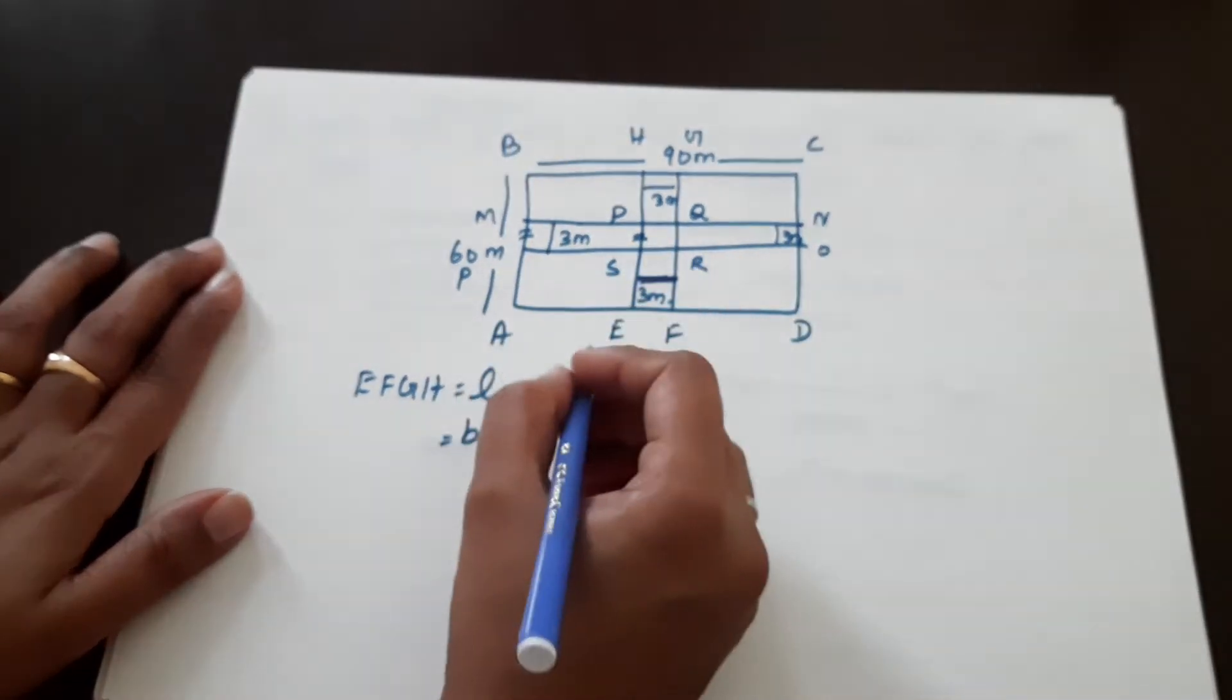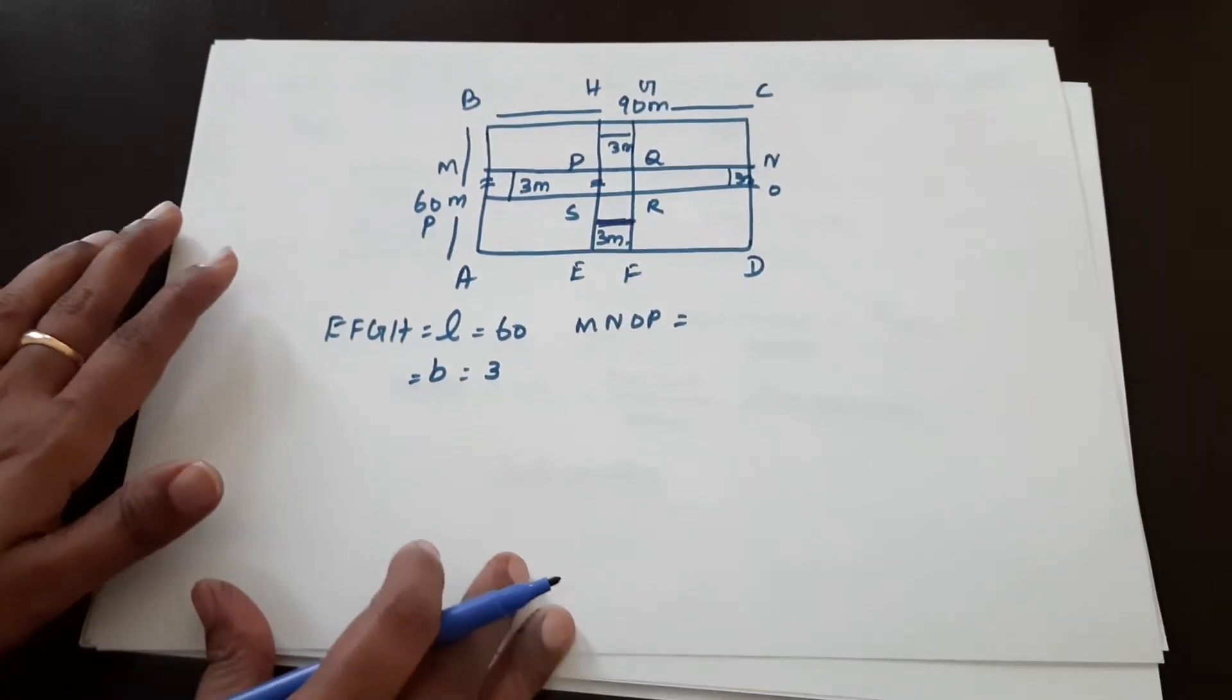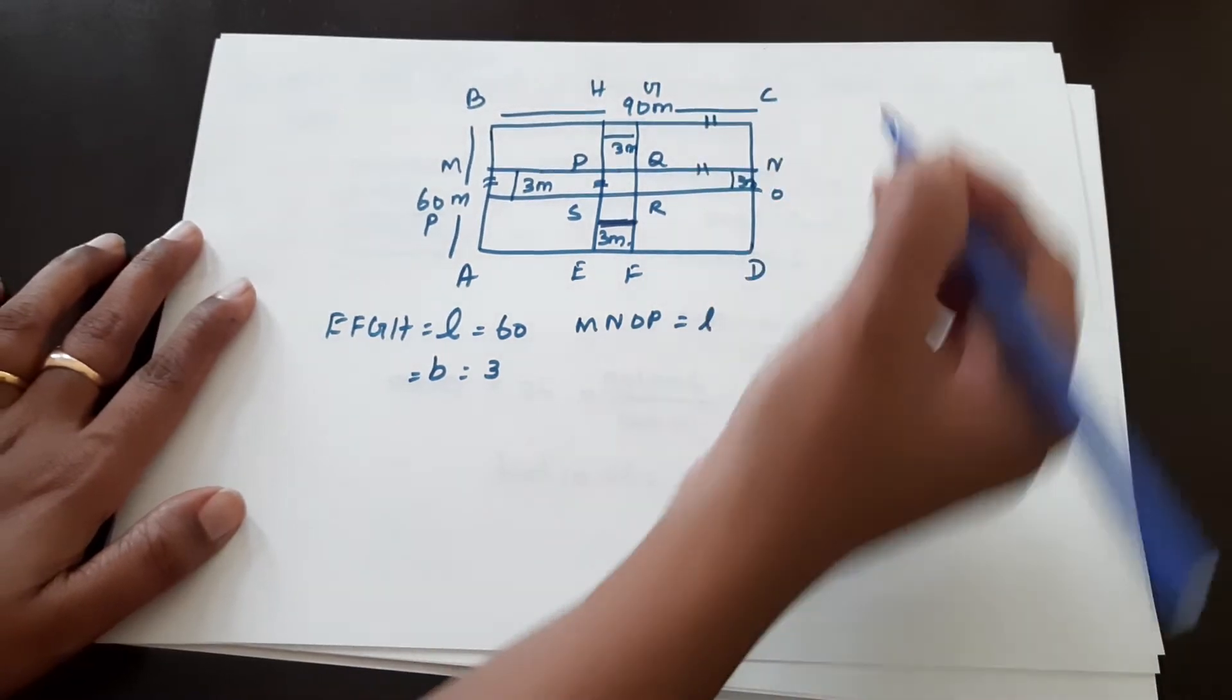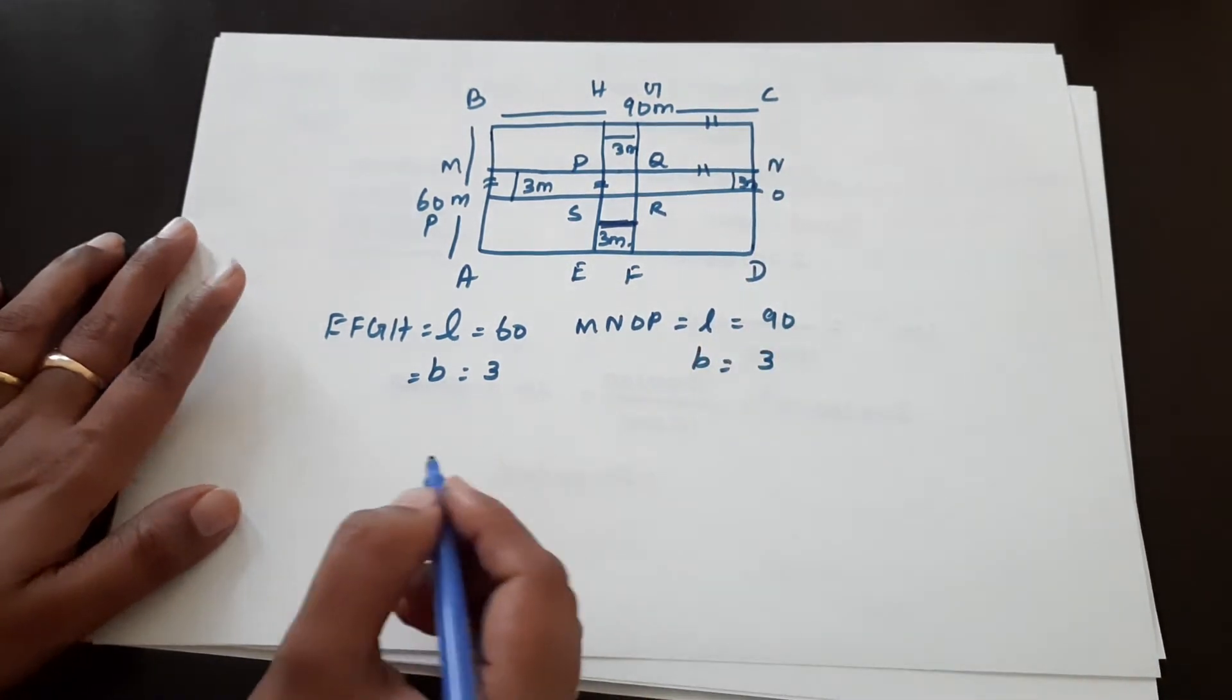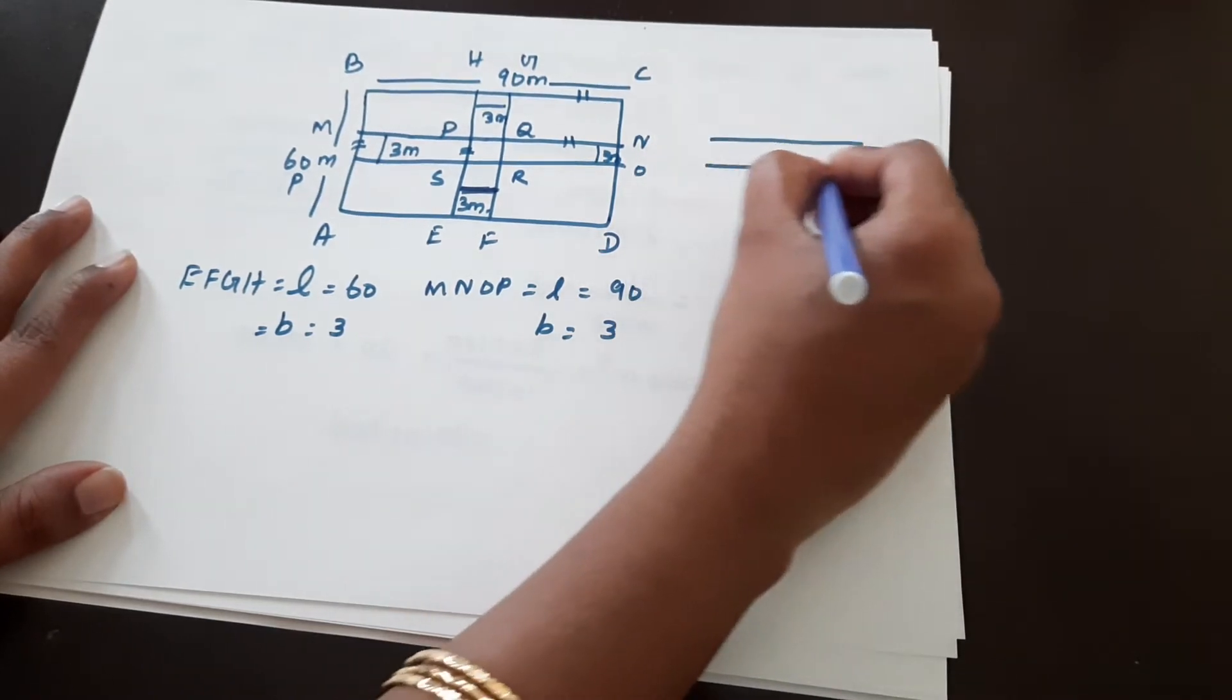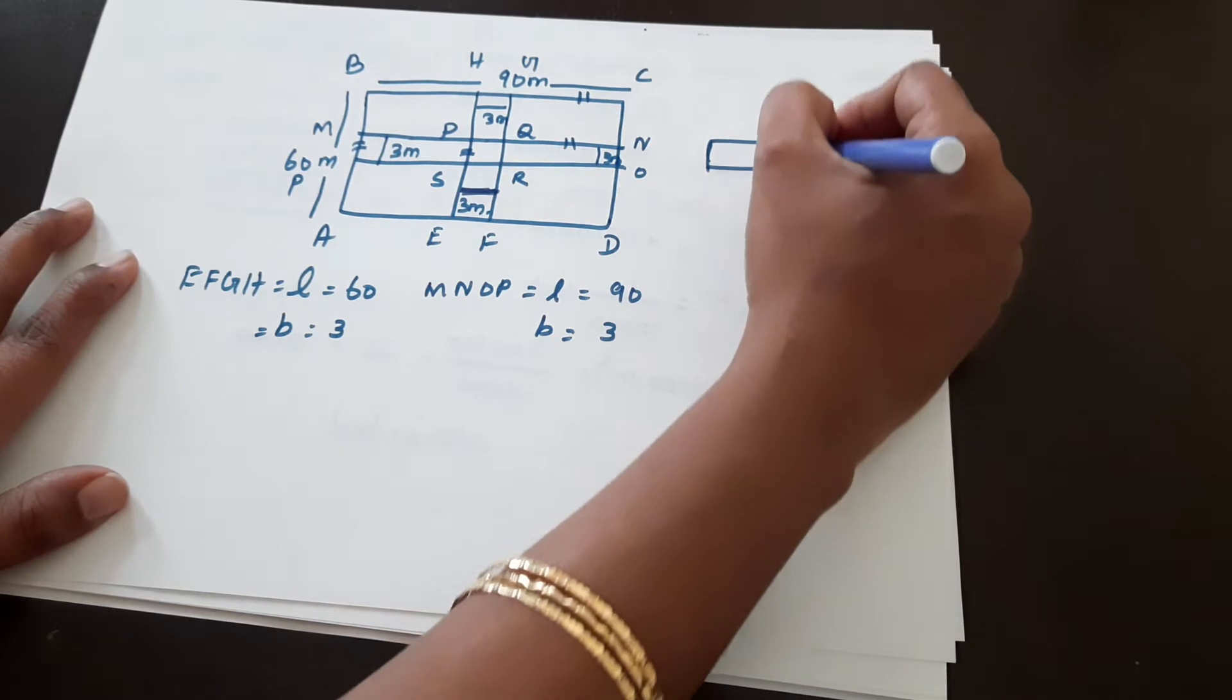Next is MNOP. MNOP length is equal. So length is 90m. So breadth is 3m. So here are the two of the road. We need to add the area.